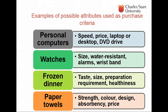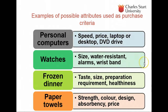Different products will have different evaluative criteria, and it's not always price. For example: frozen dinners — taste, size, preparation; watches — size, water resistance, alarms, type of wristband; personal computers — and so on across many product categories.